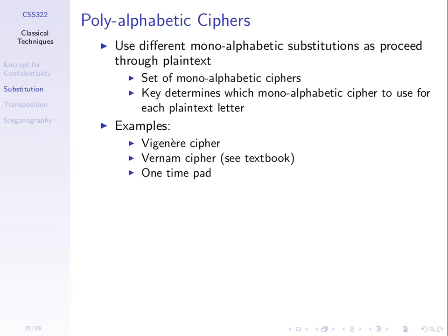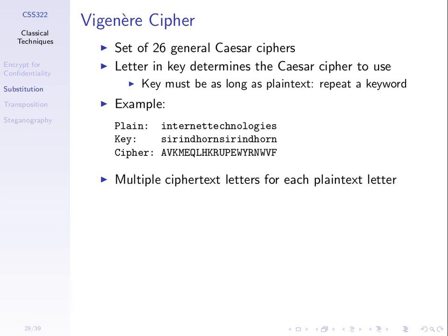So we've seen three classical ciphers: Caesar, monoalphabetic, and Playfair. Another general type of cipher is polyalphabetic — using different substitutions for the character set, so there isn't necessarily a one-to-one mapping of one plaintext letter always producing the same ciphertext letter. Examples include Vigenère, Vernam, and the one-time pad. We'll look at Vigenère and the one-time pad.